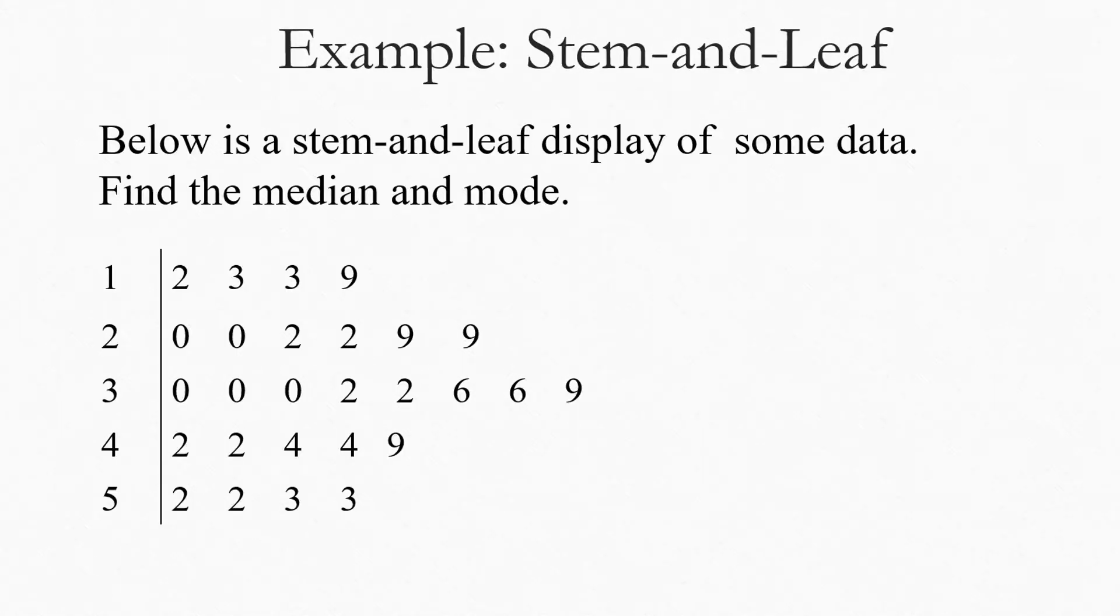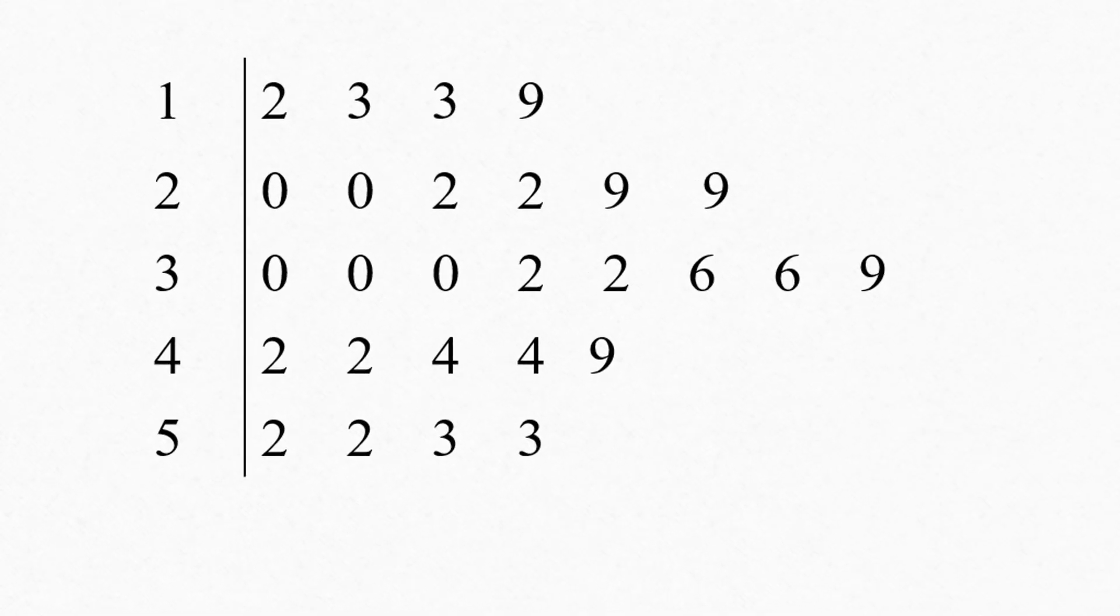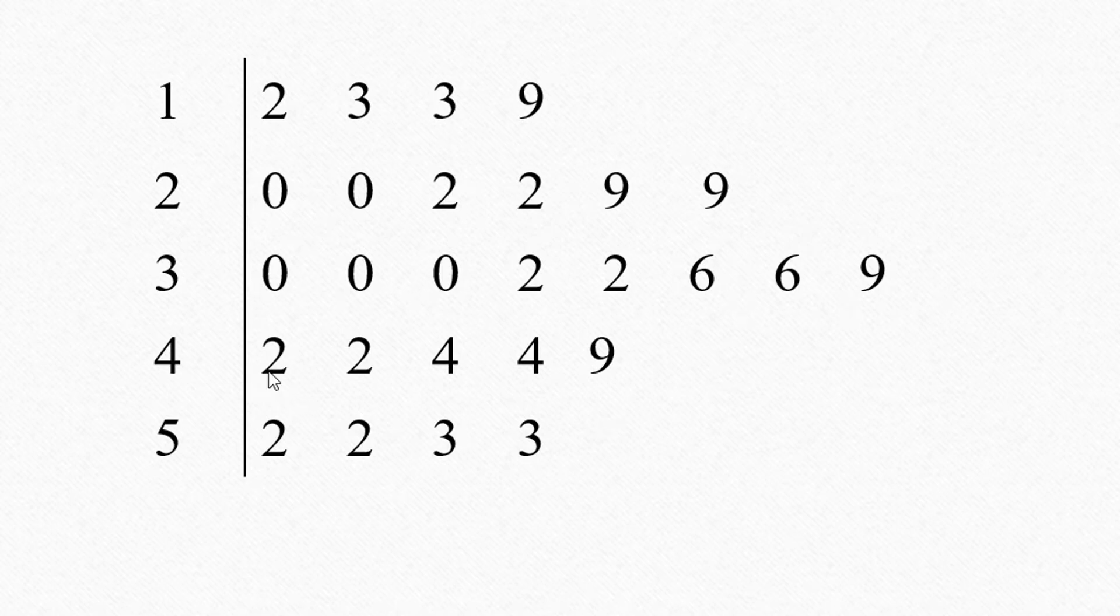So here I have an example of a stem and leaf display, and it's ranked. So that means that if you look at each row, you can see that the leaves, or the ones digit of each value, are arranged in numerical order. So for example, the first row represents the numbers 12, 13, 13, and 19. The second row represents 20, 20, 22, 22, 29, and 29. So these are all in numerical order.